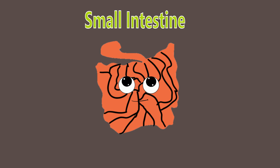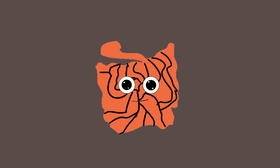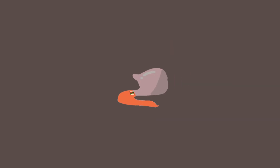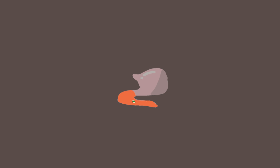Your small intestine is an organ in the digestive system. But how does it work? Well, it starts from your duodenum.